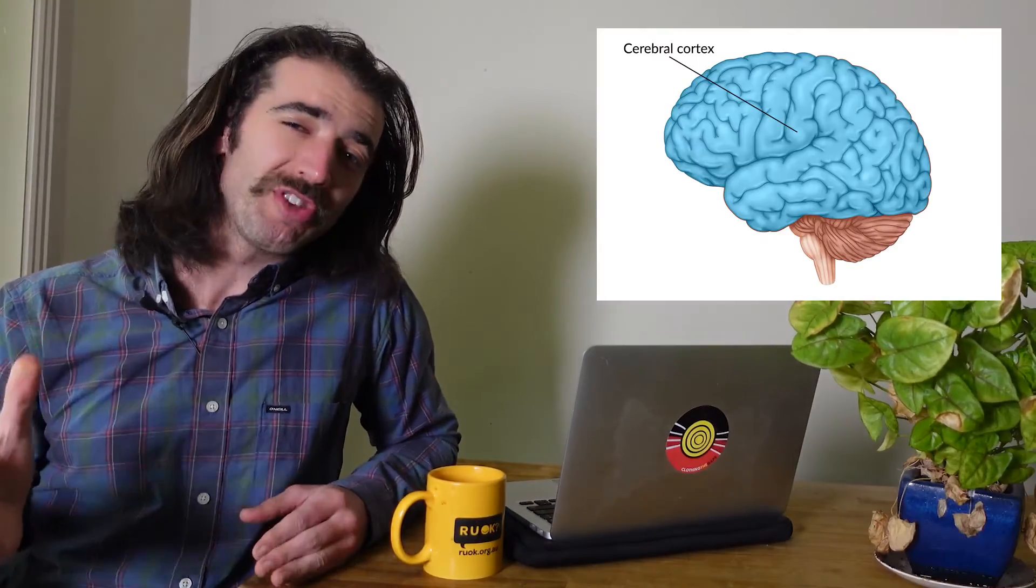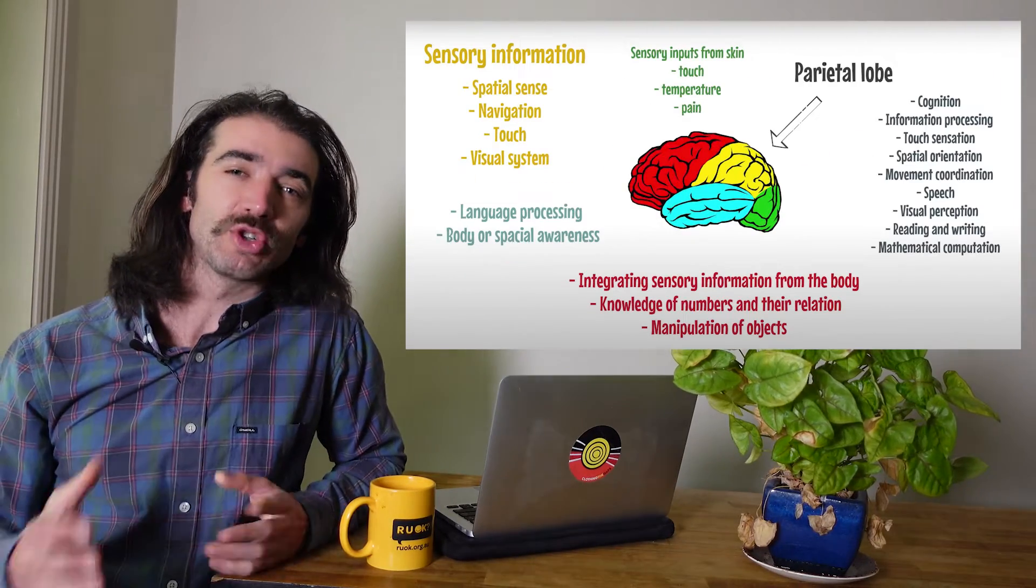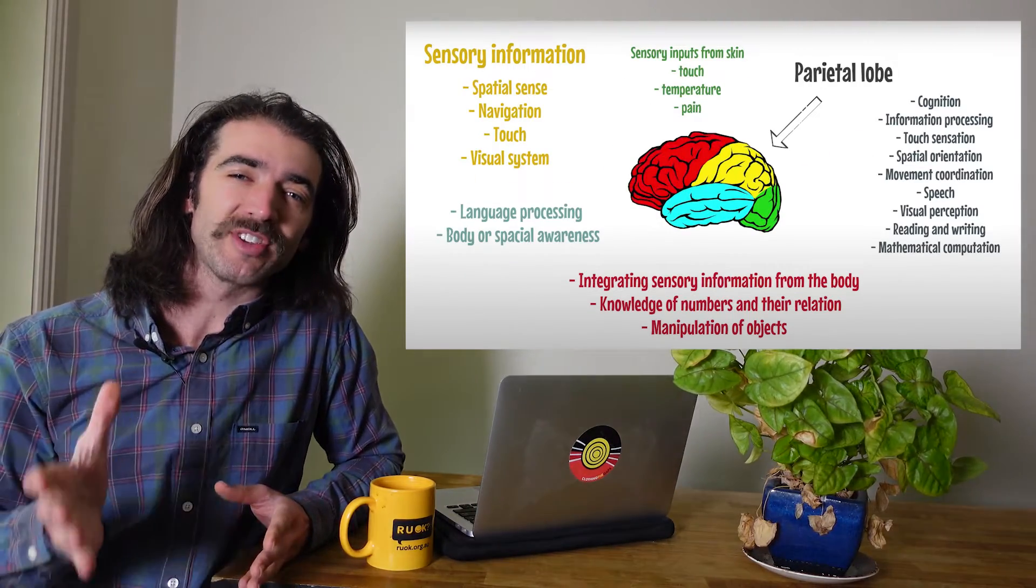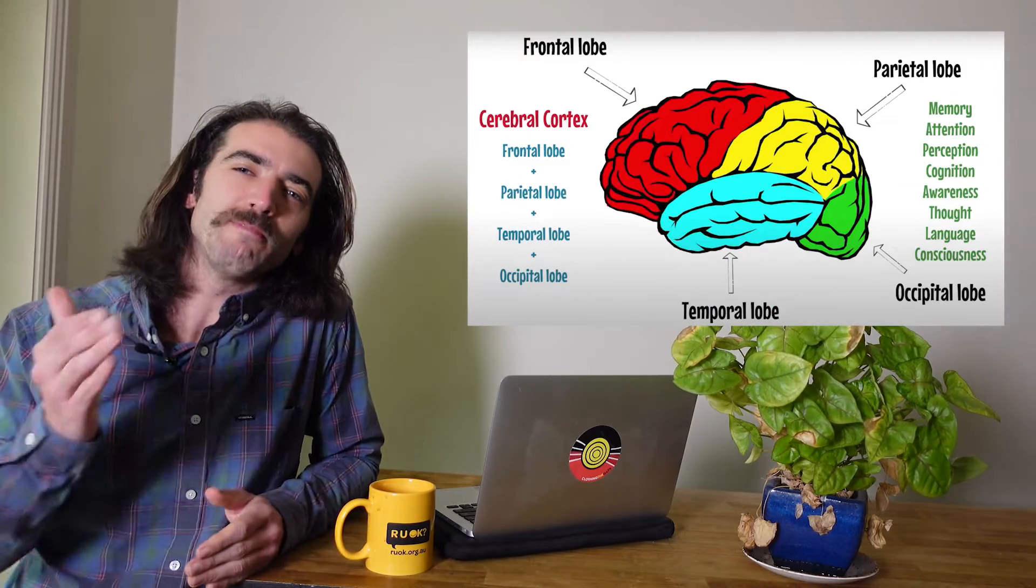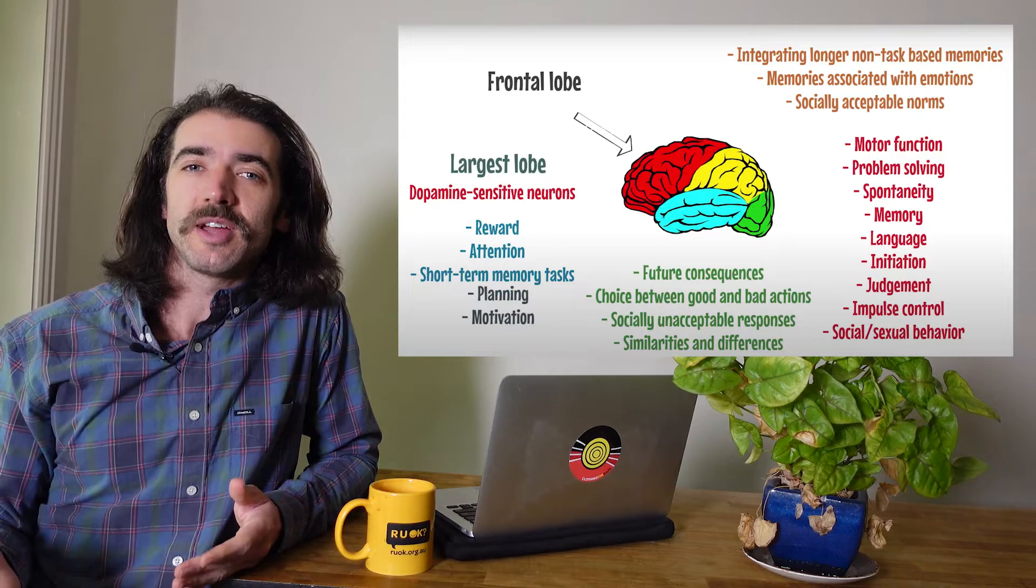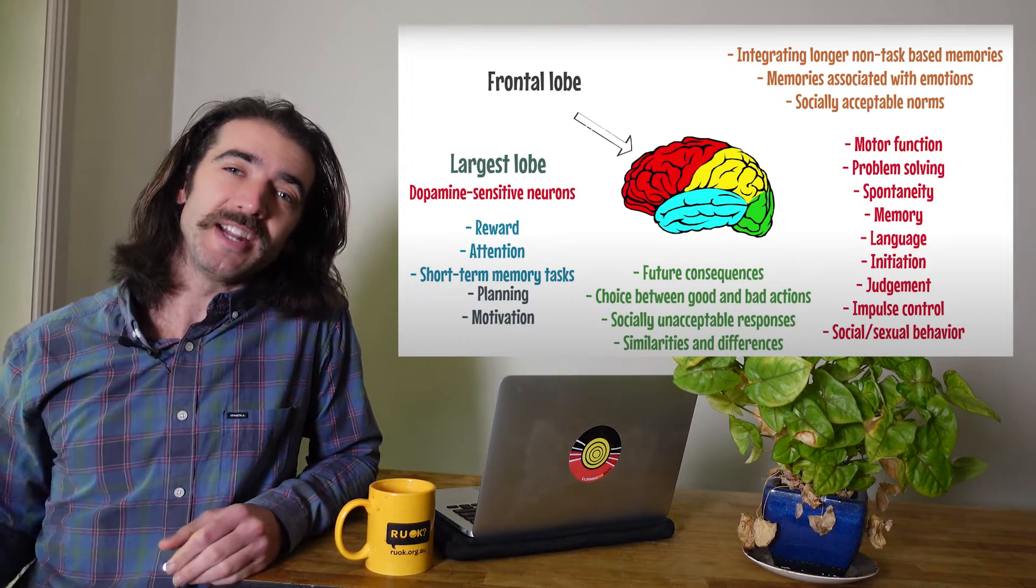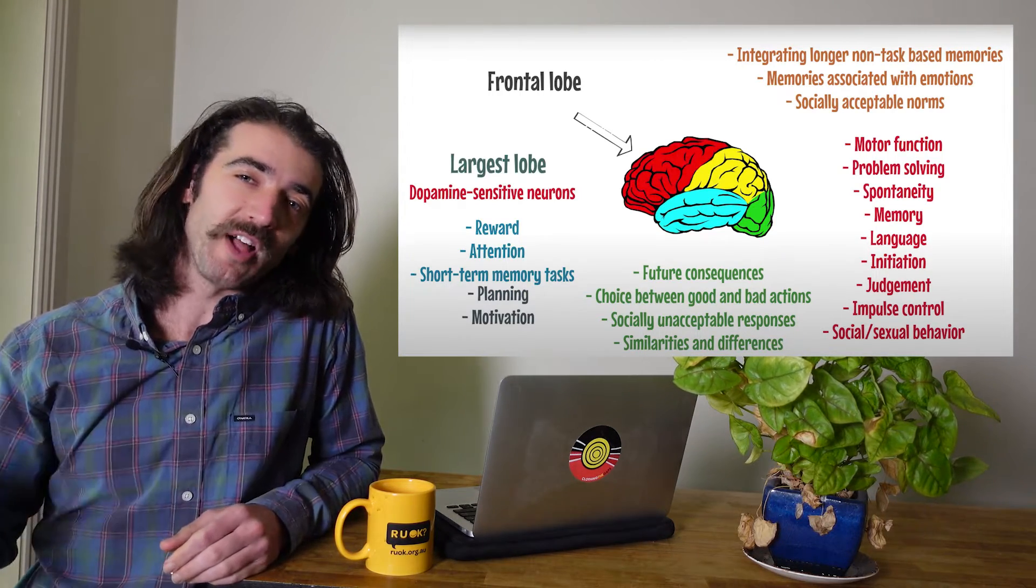Now the cerebral cortex is the largest part of our brain where most of our complex thinking, short-term memory and sensory stimulation take place. The cerebral cortex also moderates the basic functions we need to live such as breathing, maintaining a regular heart rate, our impulses to eat and our freeze, fight and flight responses.